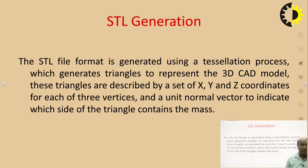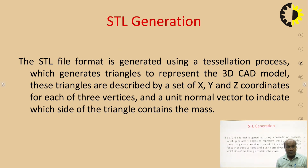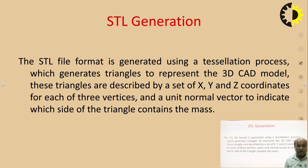The STL file format is generated using a tessellation process, which generates various triangles to represent the CAD model. These triangles are described by a set of X, Y and Z coordinates for each of the three vertices and a unit normal vector to indicate which side of the triangle contains the mass. This means the STL file format requires three coordinates of a triangle — known as a vertex — and one normal vector which defines the orientation of that part.